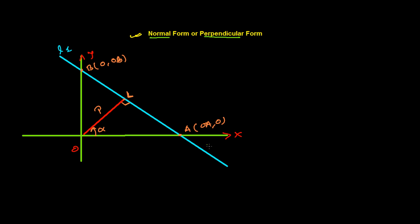So in this case, if we know the line, we know the perpendicular drawn to it from the origin, we know the length P of that perpendicular, and we know the angle alpha it makes — then what is the equation of line L1? That is the normal form. We will get: x cos α + y sin α = P, where alpha is the angle made by the perpendicular to the positive x-axis, P is the length of the perpendicular, and x and y are the general point on the line.